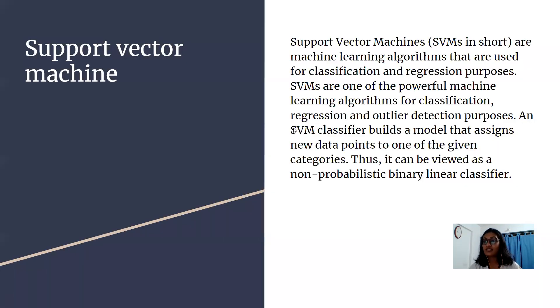Support vector machine is a fast and dependable classification algorithm that performs very well with a limited amount of data to analyze. A support vector machine is a supervised machine learning model that uses classification algorithms for two group classification problems. After giving an SVM model sets of labeled training data for each category, they are able to categorize new text.